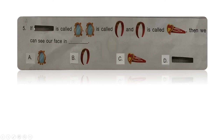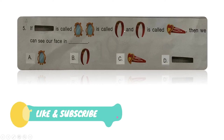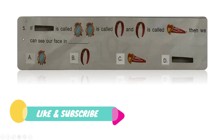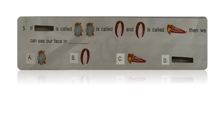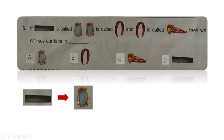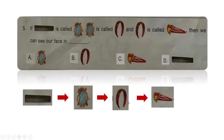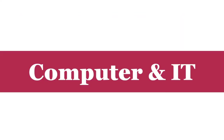Next question: if a comb is called a mirror, a mirror is called a hairband, and a hairband is called a clip, then we can see our face in which? The relationship is: comb is called mirror, mirror is called hairband, hairband is called clip. We can see our face in a mirror, but what is a mirror called? A mirror is called a hairband. So the right answer is option B: the hairband.